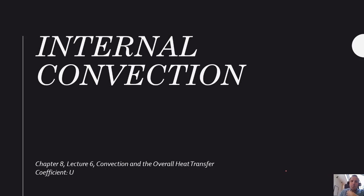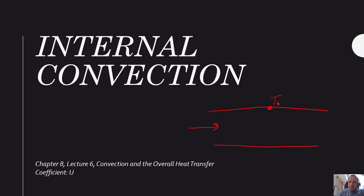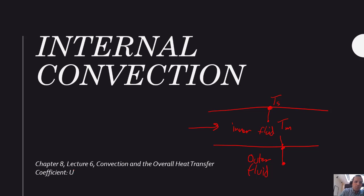Previously we talked about flow through a tube or channel with a constant surface temperature Ts. Where the overall heat transfer coefficient becomes relevant is when there is another fluid on the outside. We might have an outer fluid and an inner fluid, with heat transfer from the internal fluid at Tm to the inner surface, then convection from the outer fluid to the outer pipe, then conduction through the pipe wall, and then convection inside. U gives us a convenient way of handling this, which is very relevant for heat exchangers.